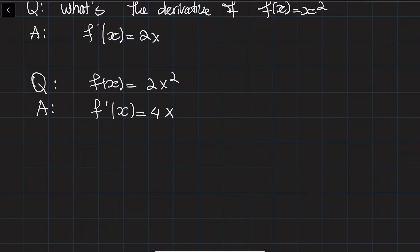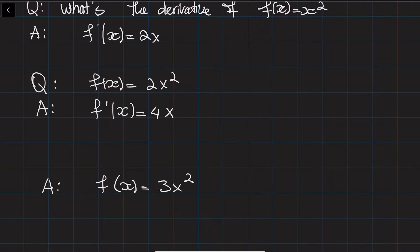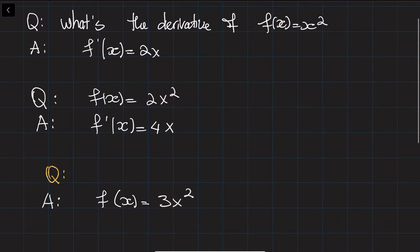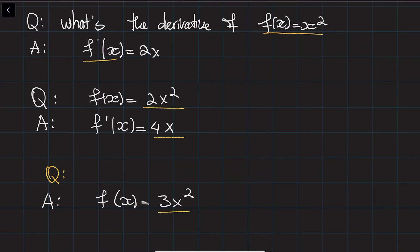Now what I would like to do is reverse the question. Previously I asked: given a function, what is its derivative? Now I'm giving you a derivative — say f of x equals 3x squared — and asking: what is the original function? Well, the function is going to be x cubed, because the derivative of x cubed is 3x squared.